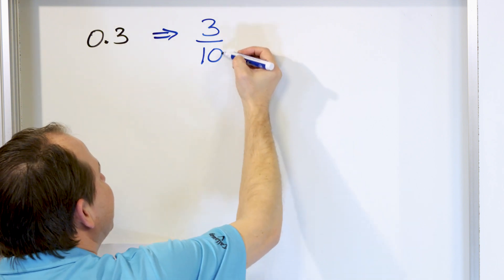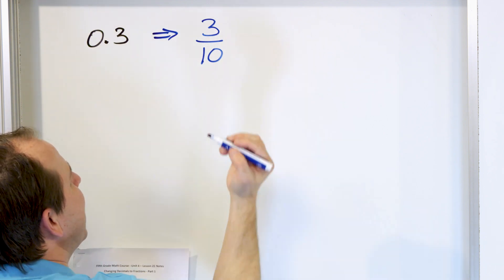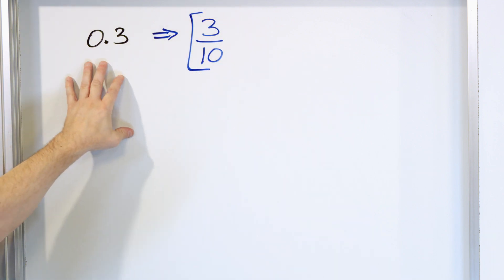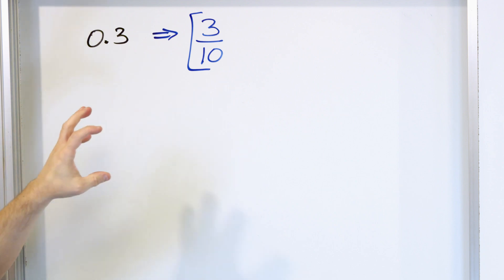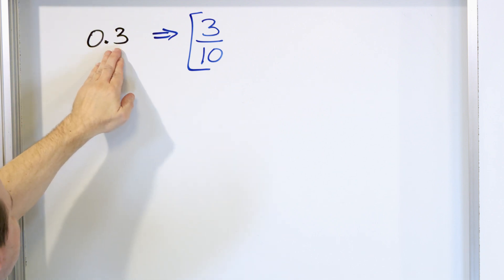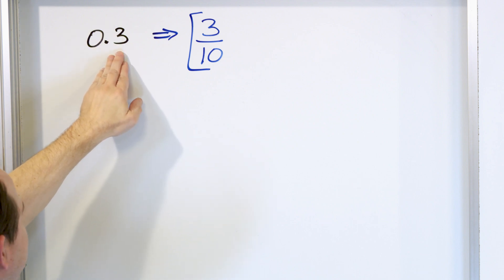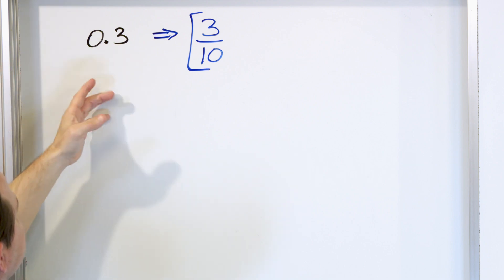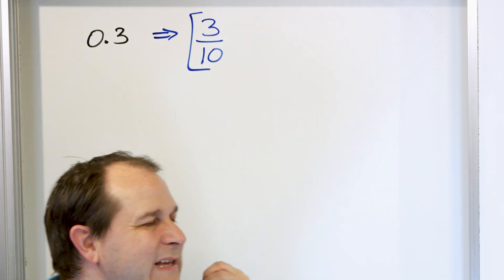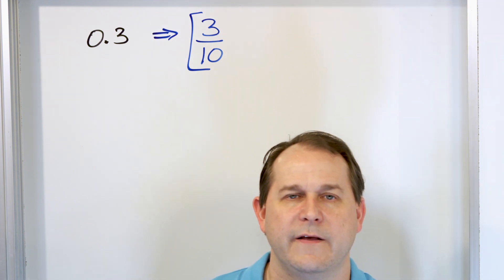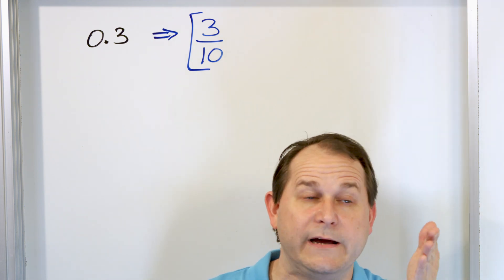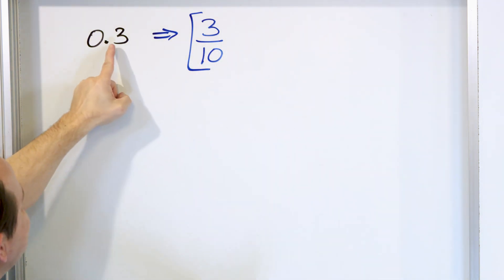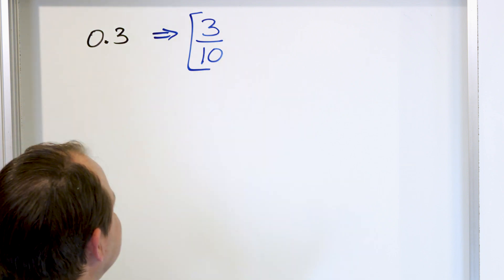Since this fraction is already simplified, I cannot divide top and bottom to simplify it further — this is the final answer. This is a really important example to internalize: this decimal is telling you everything you need to know about what it means as a fraction. It's in the tenths place, and I have three of them, so it's three tenths. Remember, we can count by tenths: one tenth, two tenths, three tenths means I have three little wedges of a pizza each the size of a tenth. That's what this actually means. So to write it as a fraction, it's three tenths.